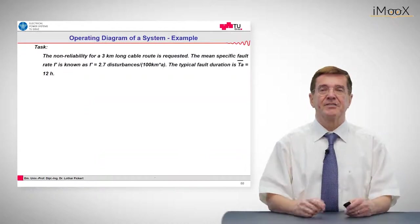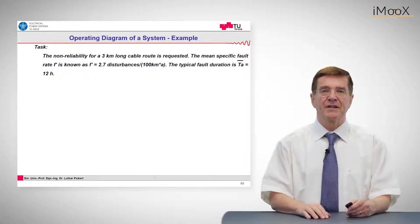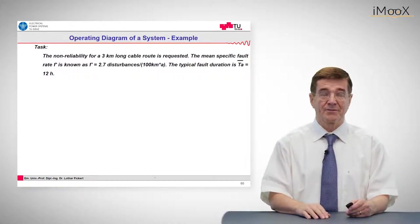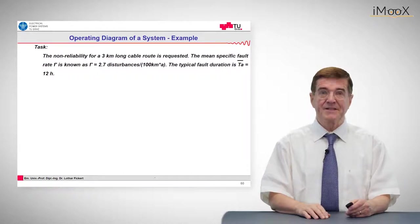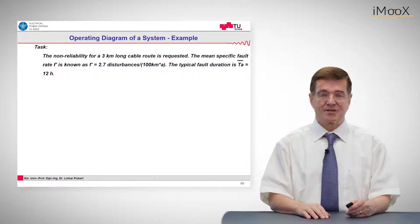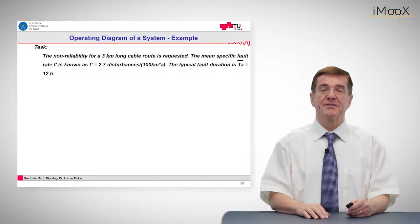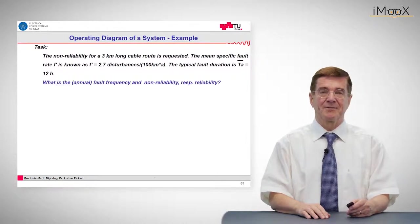Again, let's apply this to an example. We would like to have the non-availability and non-reliability for a length of three kilometers of cable. We know that the average outage frequency is three events per 100 kilometers. The question is, how big is the non-reliability of this three kilometers of cable?